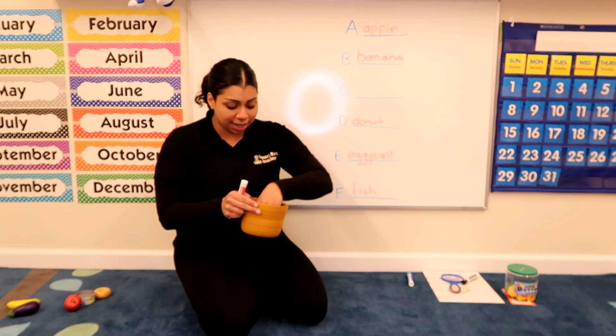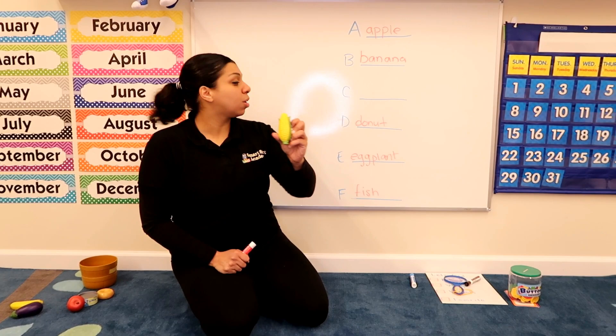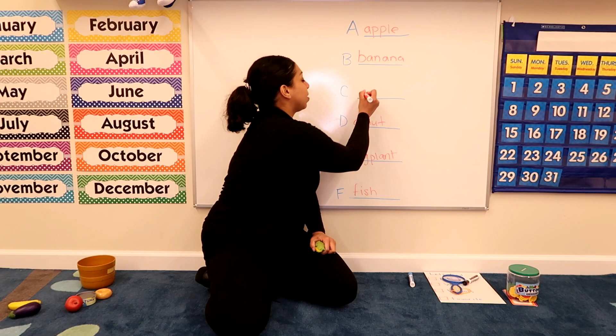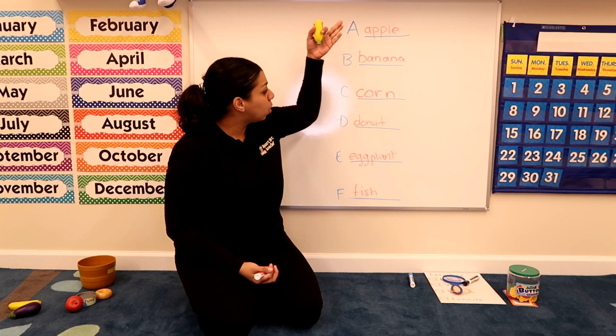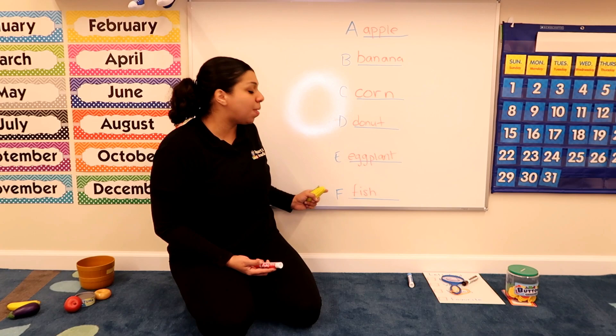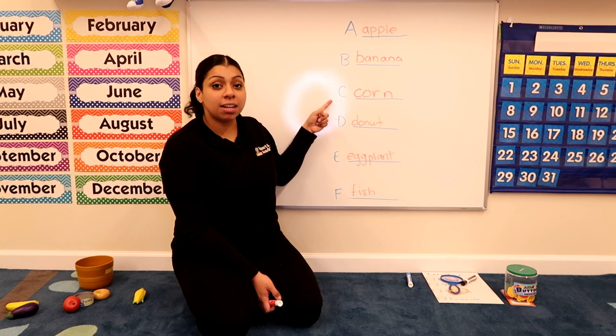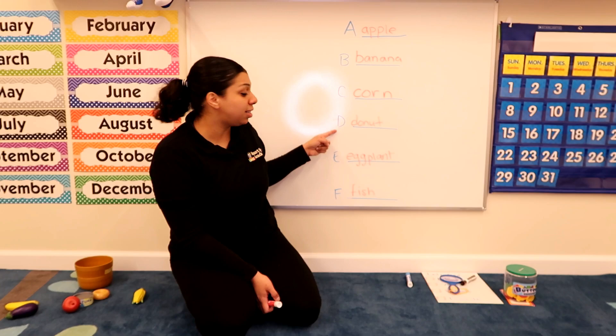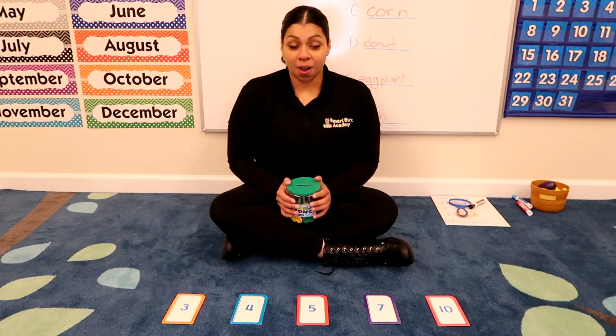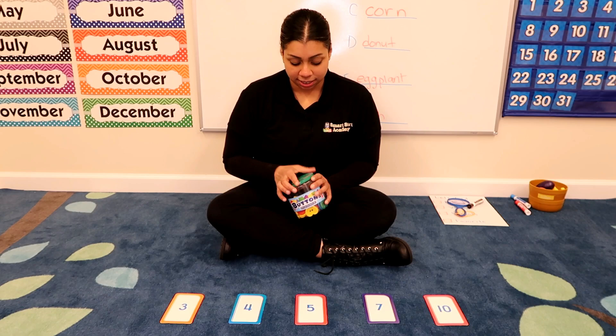Last food. What does this start with? It's corn. C, c, corn. The last letter is a C. C-O-R-N. Corn. I'm glad we had a chance to practice our letter sounds from A through F. Let's review: A, apple. B, banana. C, corn. D, donut. E, eggplant. And F, fish.